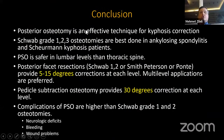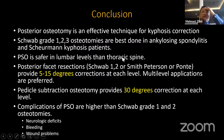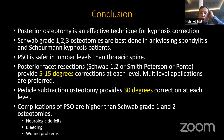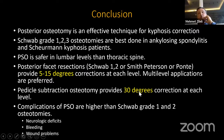In conclusion, posterior osteotomy is an effective technique for kyphosis. Schwab grade 1, 2, 3 osteotomies are best done in ankylosing spondylitis and Scheuermann's kyphosis patients. PSO is safer in lumbar levels than thoracic spine. Partial facet resections — Schwab 1 and 2, Smith-Petersen and Ponte osteotomies — may provide 5 to 15 degrees correction at each level, so multiple levels should be done. Pedicle subtraction osteotomy provides 30 degrees of correction at one level. Complications of PSO are higher than Schwab grade 1 and 2 osteotomies, and they may include neurologic deficit, bleeding, and wound problems.